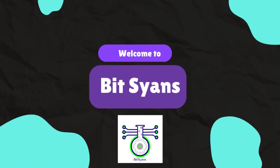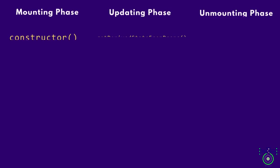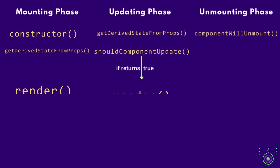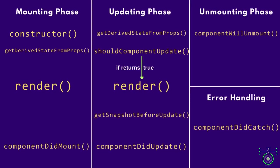React class components have various lifecycle methods that get called at different stages of a component's life. With the introduction of hooks, functional components can also manage their state and lifecycle effectively. We will categorize the lifecycle methods into three phases: the mounting phase, the updating phase, and the unmounting phase. The constructor method marks the initial step in constructing a component's foundation.